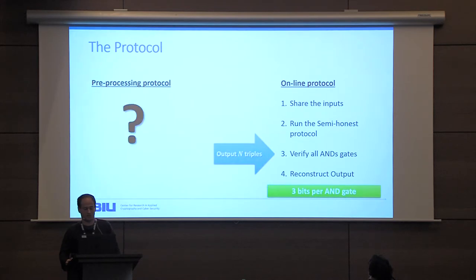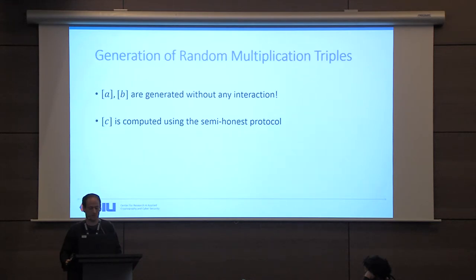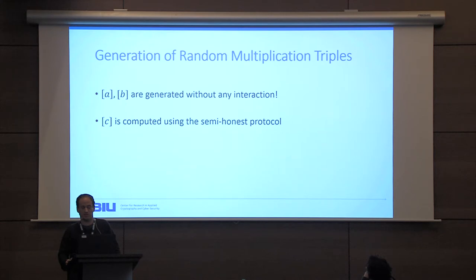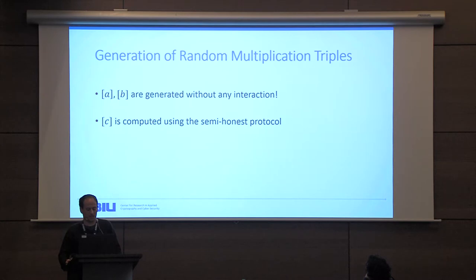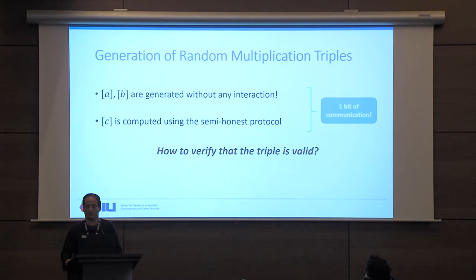We now focus on the preprocessing or offline protocol that generates these random triples. We start by generating random shares without any interaction — this requires no interaction between parties except for a setup step that generates keys used with AES to produce as much random sharing as needed. We then compute the sharing of c using the semi-honest protocol, which requires only one bit of communication. The question remains how to verify that this triple is valid, since the corrupted party may cheat when using the semi-honest protocol.